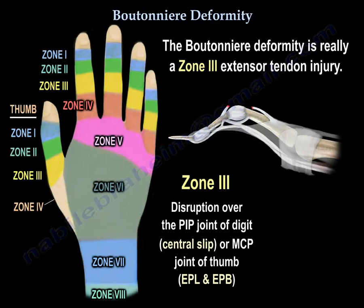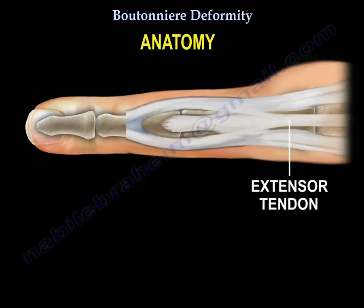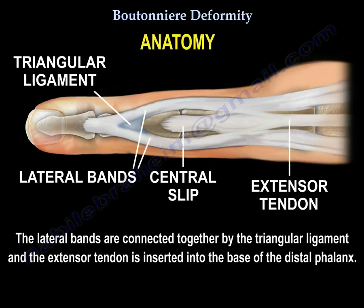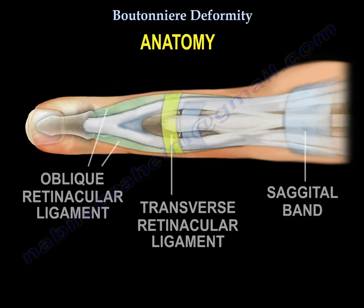Here you can see the zones of the extensor tendon injuries. Here is the PIP joint, the extensor tendon, and the central slip inserted into the base of the middle phalanx at the PIP joint. Here are the lateral bands, connected together by the triangular ligament. The extensor tendon is inserted into the base of the distal phalanx. The triangular ligament connects the two lateral bands and prevents their volar subluxation. Here you can also see the sagittal band, the transverse retinacular ligament, and the oblique retinacular ligament.